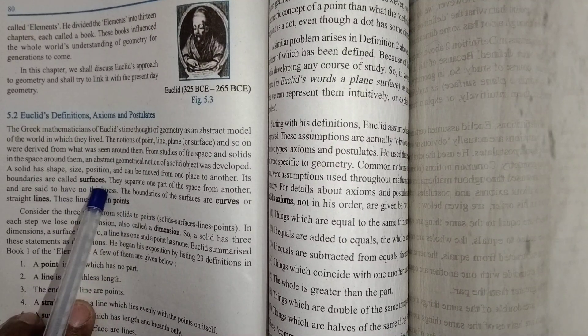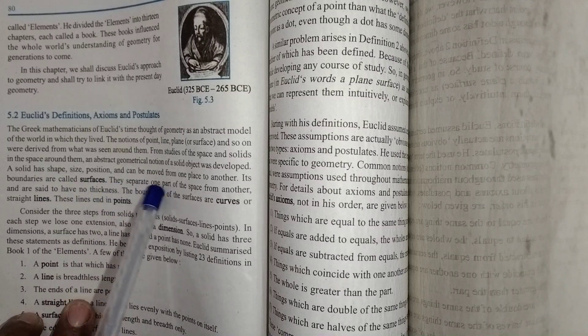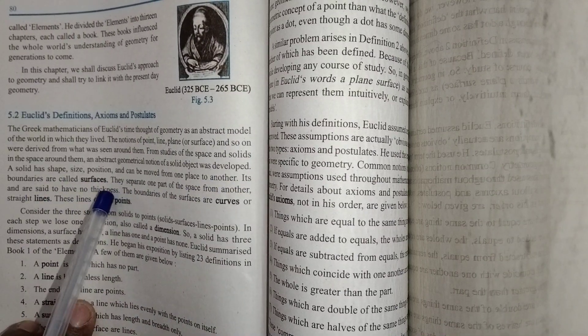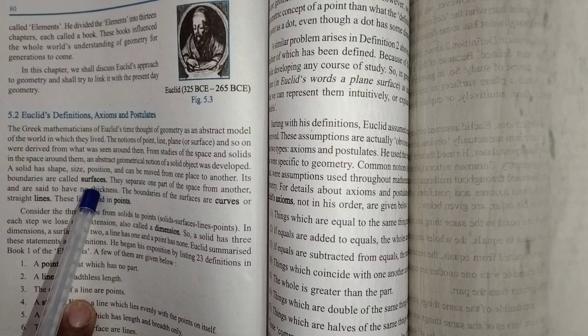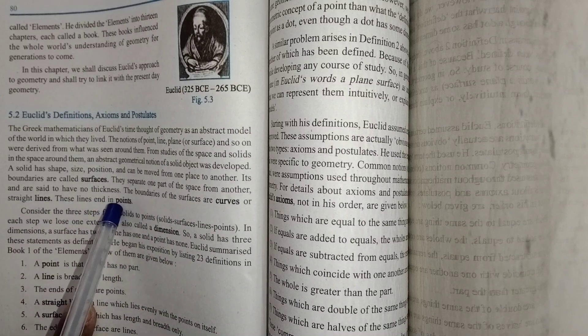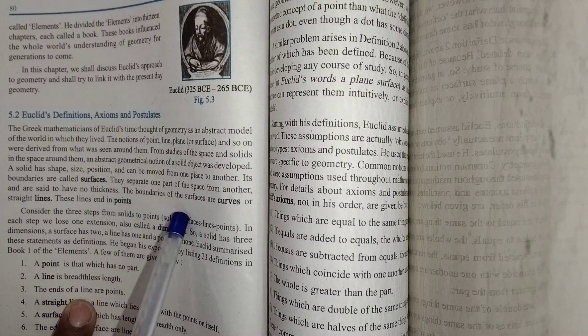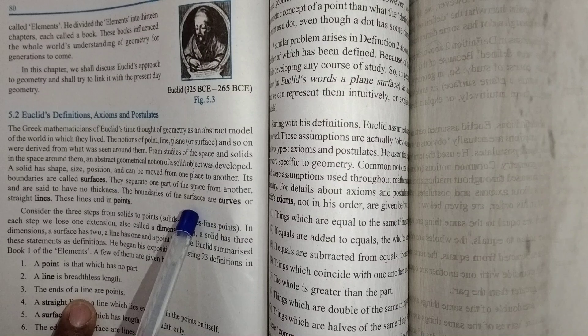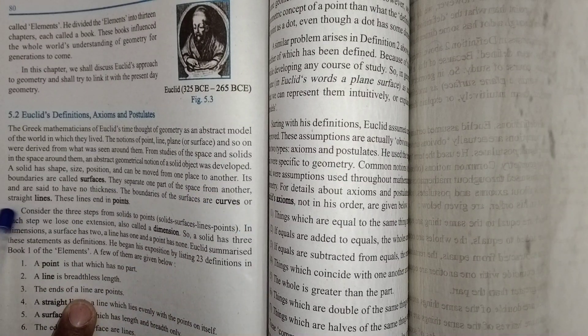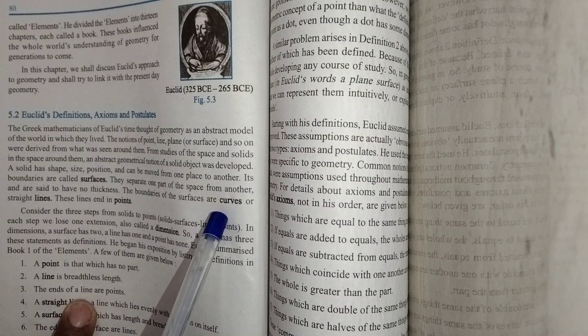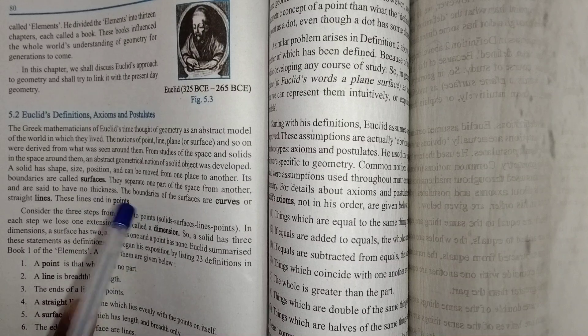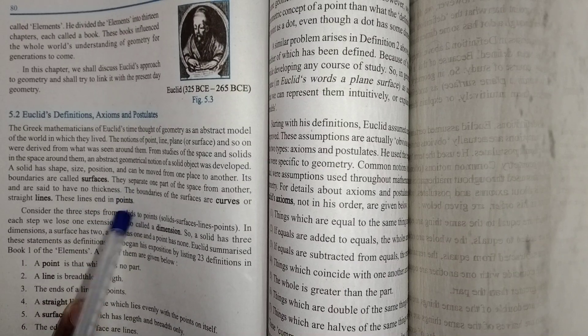A solid has shape, size, position and can move from one place to another. Its boundaries are called surfaces. These separate one part of space from another and have no thickness. The boundaries of surfaces are curves and straight lines. These lines end in points.